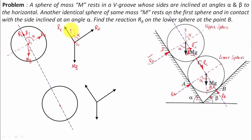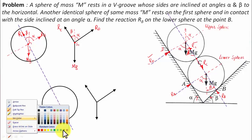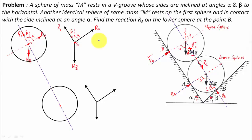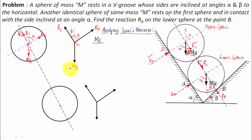Now applying Lamy's theorem. Lamy's theorem states that if three forces in equilibrium act at a point, each force is proportional to the sine of the angle between the remaining two forces. Applying this to the upper sphere: Mg divided by sine of the angle between RC and RD, which is alpha plus beta.